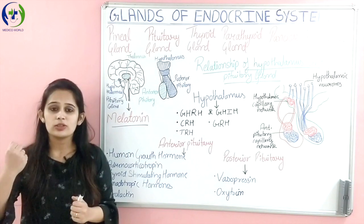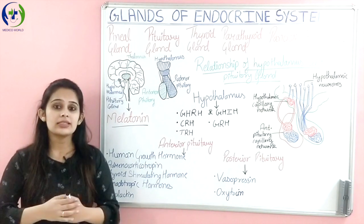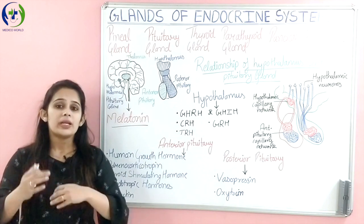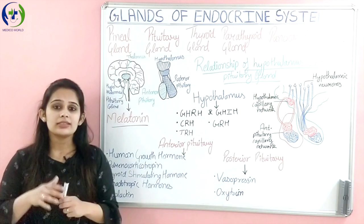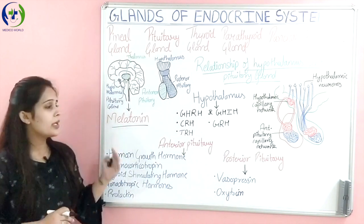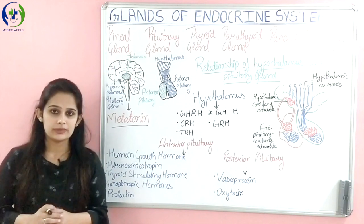When darkness occurs, melatonin synthesis is stimulated. And when light comes, melatonin synthesis is inhibited. So this is how melatonin regulates our sleep cycle.